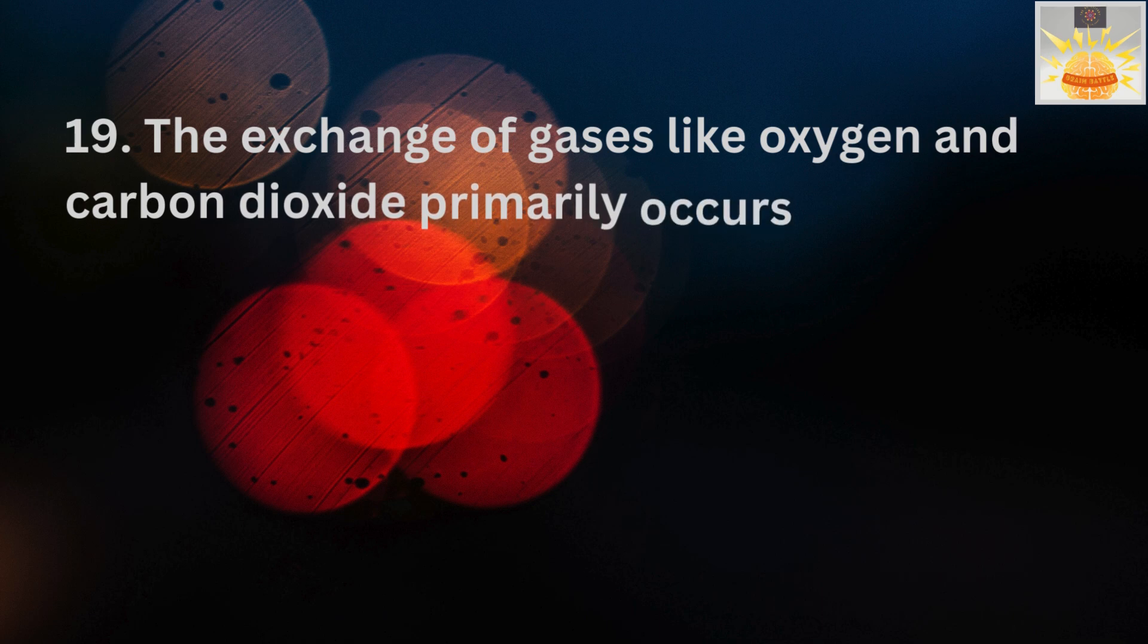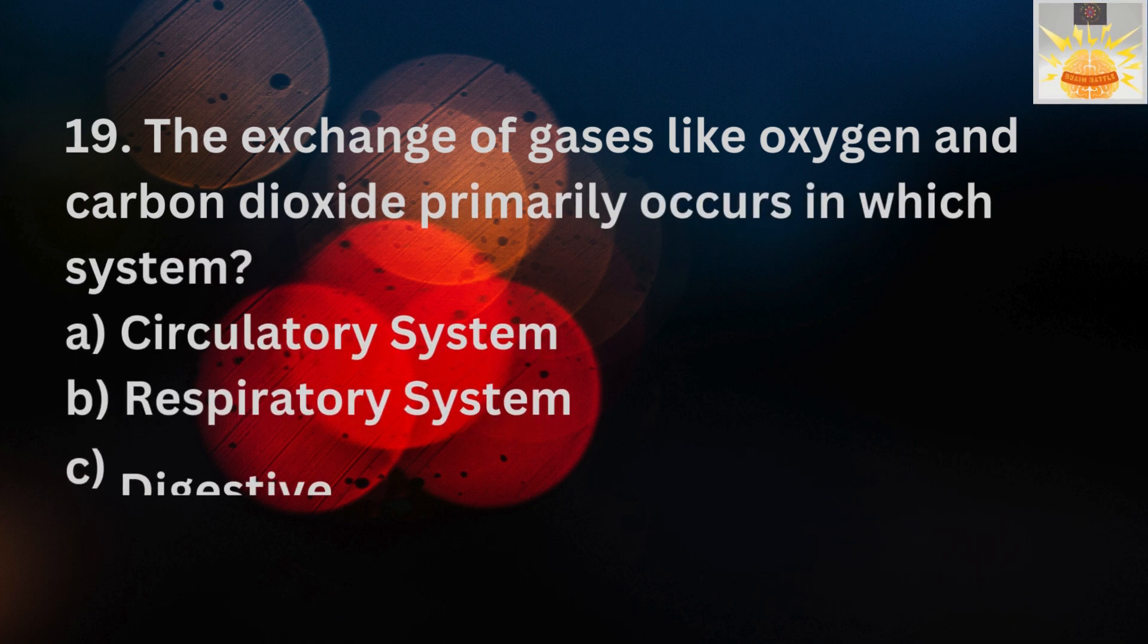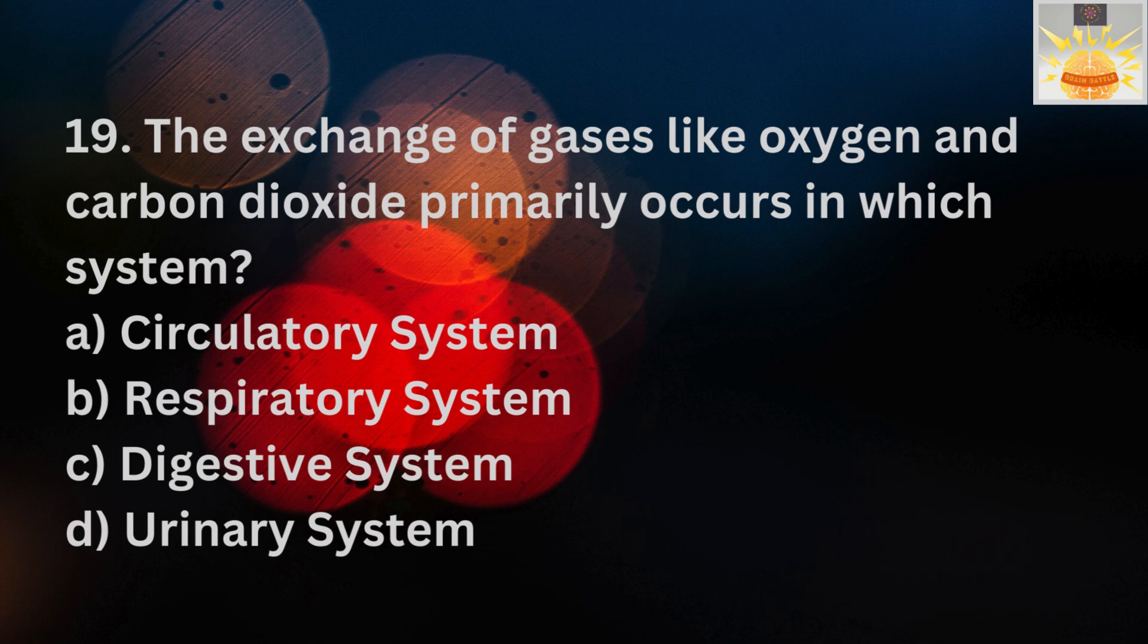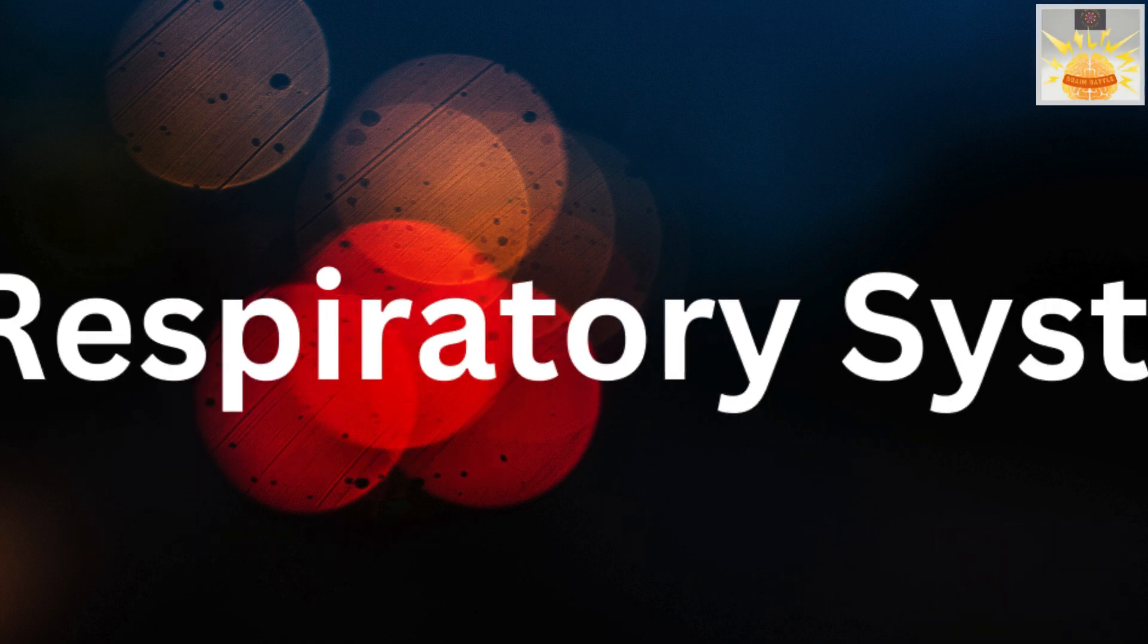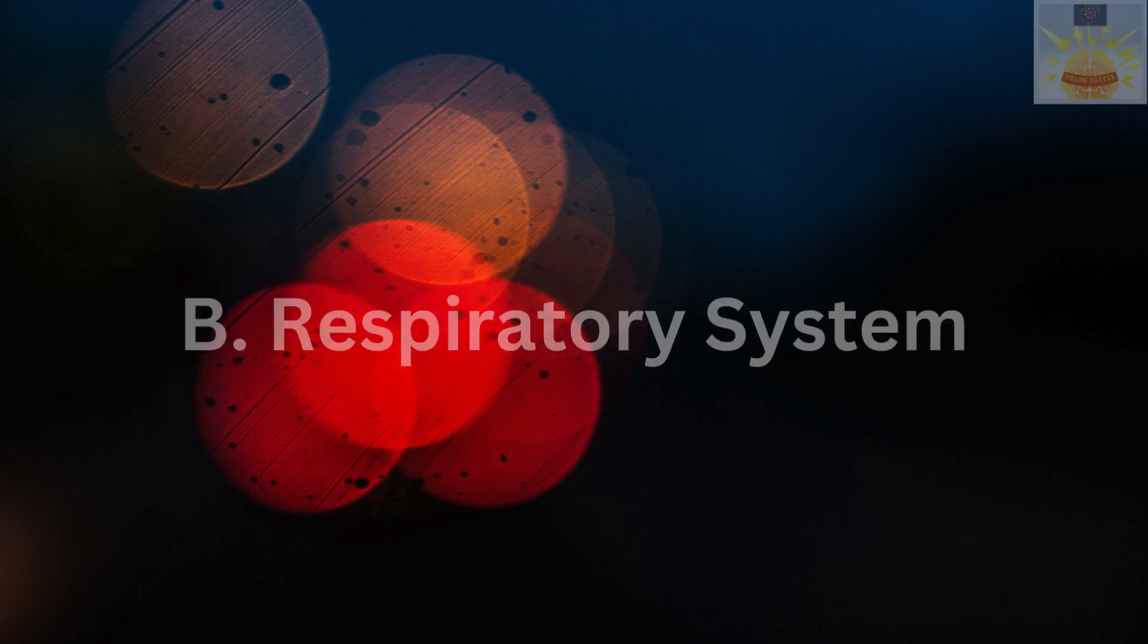Question 19. The exchange of gases like oxygen and carbon dioxide primarily occurs in which system? And the right answer is B. Respiratory system.